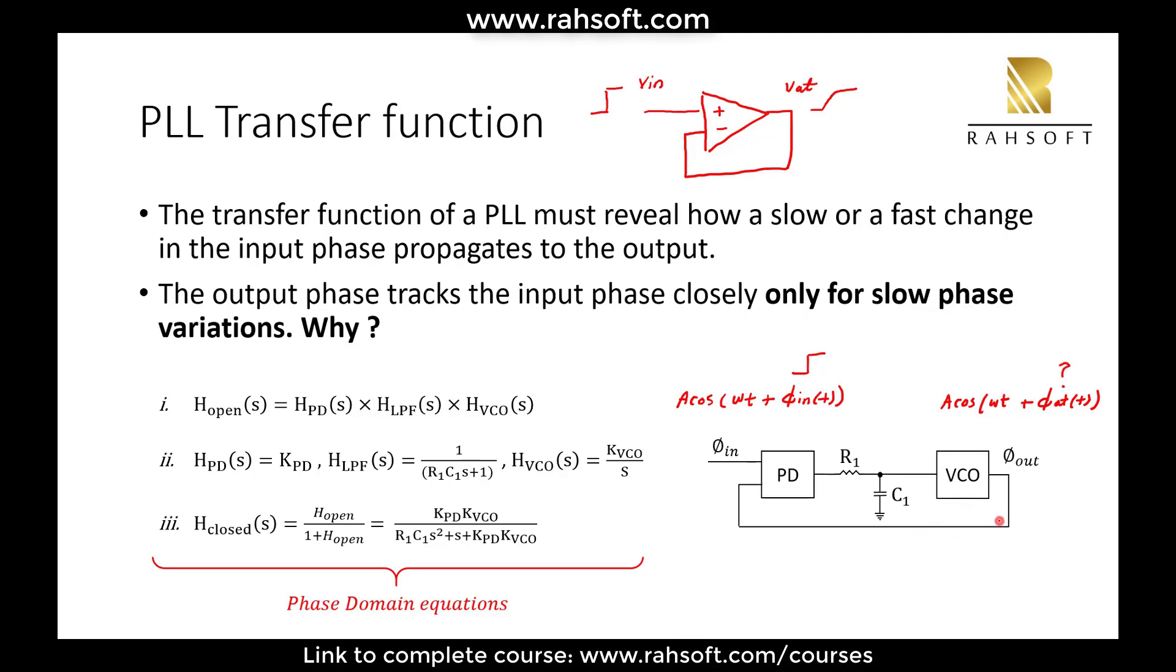Having a transfer function for PLL is important because it reveals how a slow or fast change in the input phase propagates to output, similar to op-amp. For example, let's say this op-amp has an omega 3 dB. If we have input variations which are less than omega 3 dB, this loop, the output will be able to follow this.